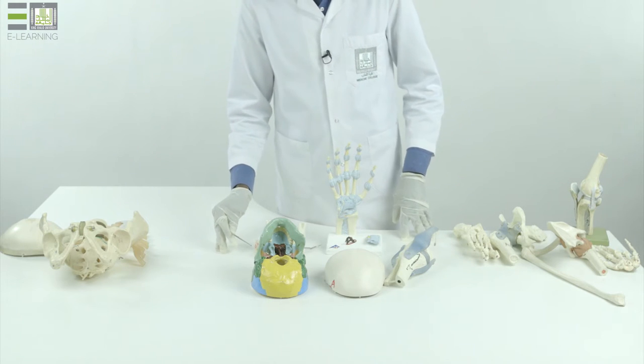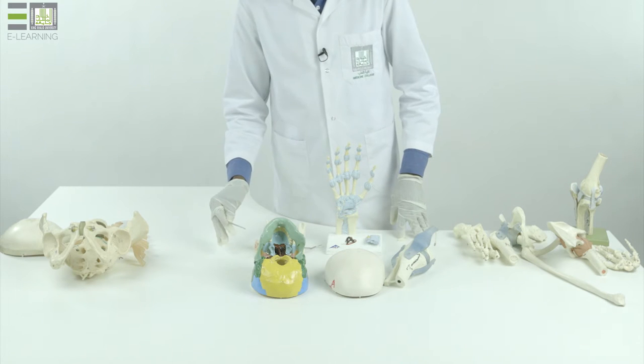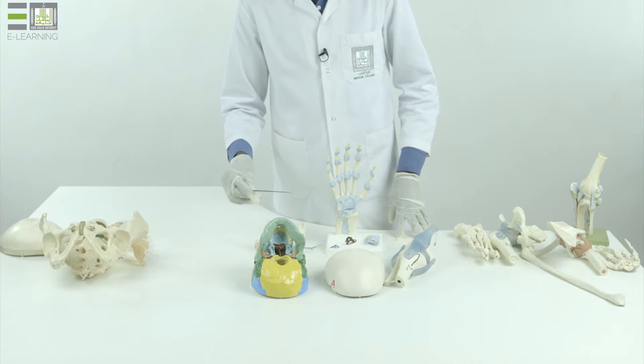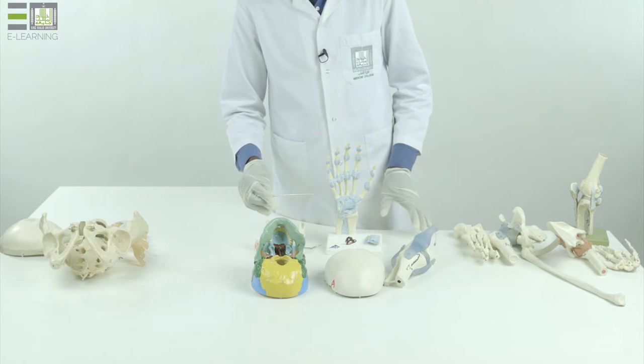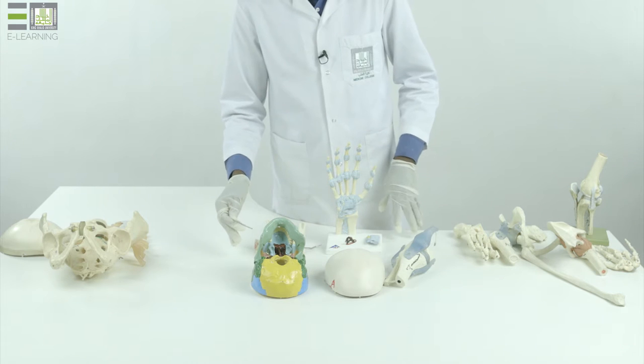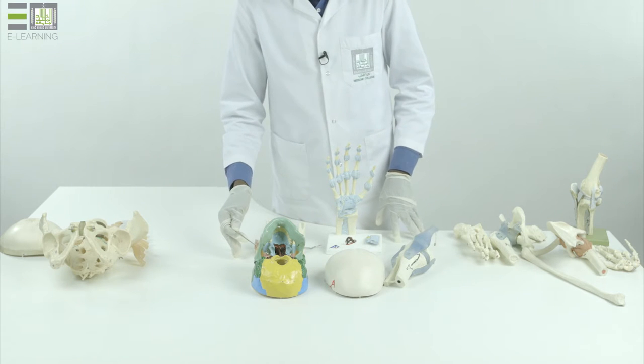This topic is about the joints. The definition of the joint is the site of meeting of two or more bones, and they are classified according to the tissues which are present between the articulating bones.